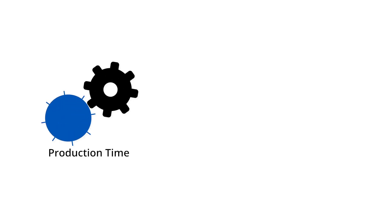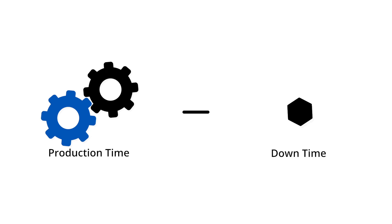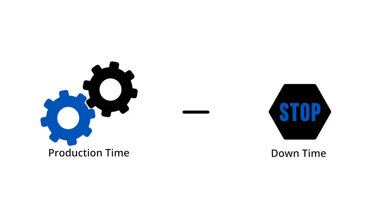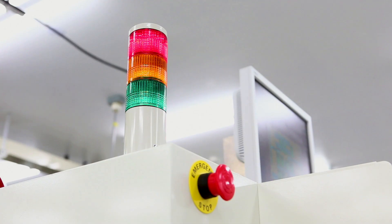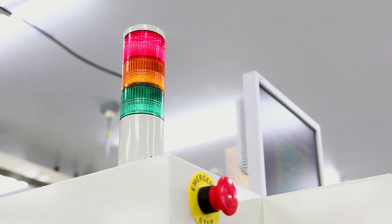Availability is the ratio of run time to planned production time. To find your run time, simply take your planned production time and subtract all the time where your manufacturing process was supposed to be running but was not, due to both planned and unplanned stops.